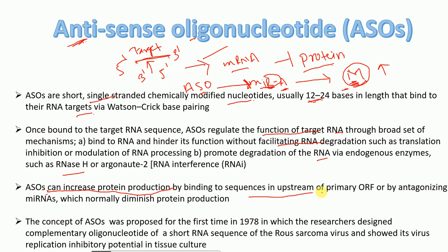Antisense oligonucleotides can also increase protein production by binding to sequences upstream of the primary ORF, or by antagonizing microRNAs. MicroRNAs normally diminish protein production, but when they are antagonized by antisense oligonucleotides, protein production is increased.